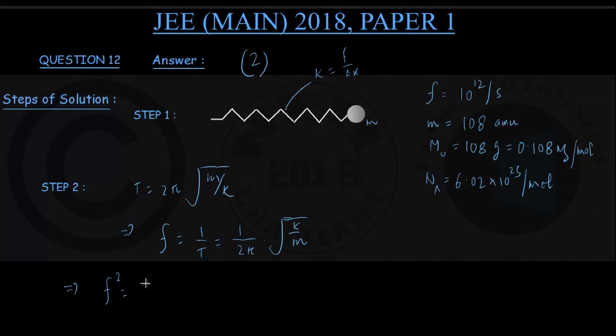From this, making k the subject, k is coming out to be 4 pi square into f square into m. Let me call this equation number 1. I have got force constant of the bond k equals 4 pi square f square into m, f being frequency of oscillation of this silver atom of mass small m.